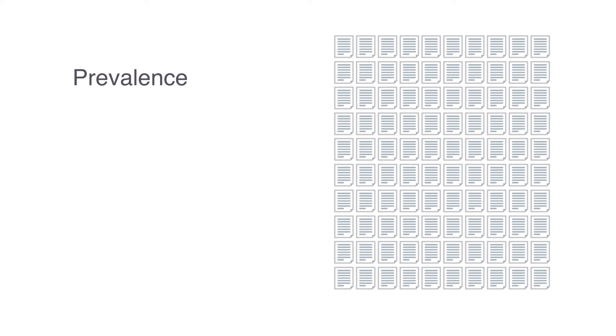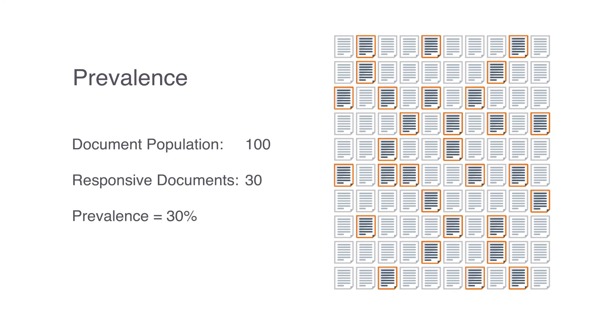First, we'll start with prevalence. In a legal search, whether through manual review or TAR, you're trying to classify documents as either responsive or not responsive. Prevalence tells us how many responsive documents are in a given population. For example, if you have a population of 100 documents and 30 of those documents are actually responsive, you have a prevalence of 30%.